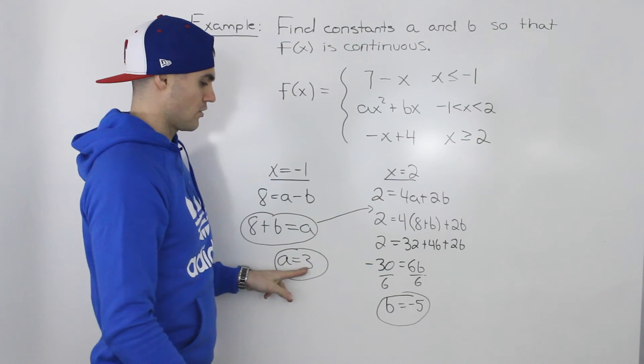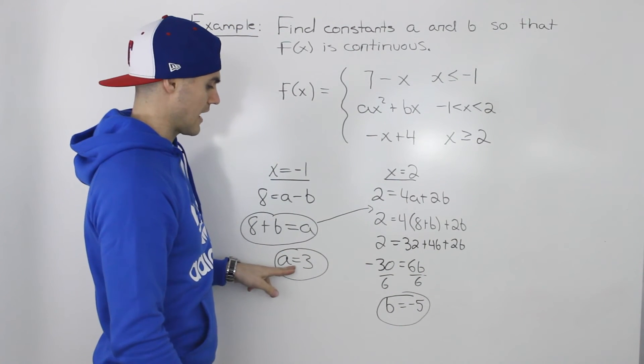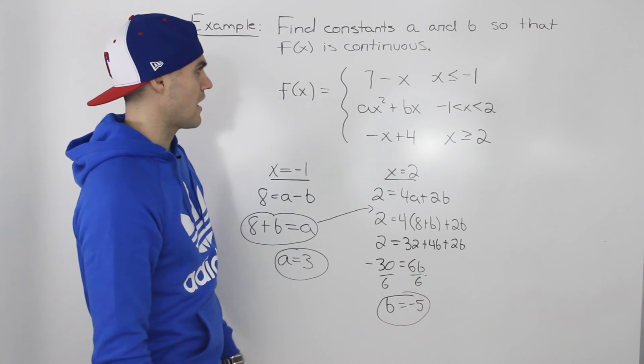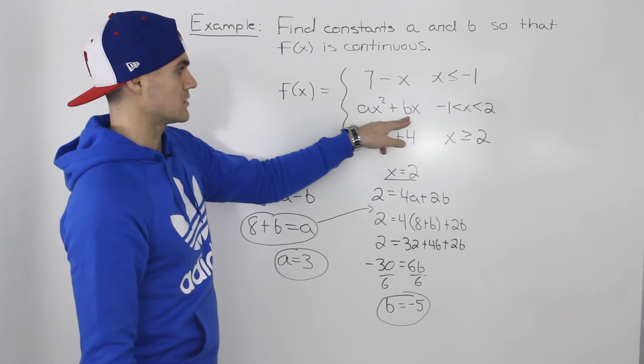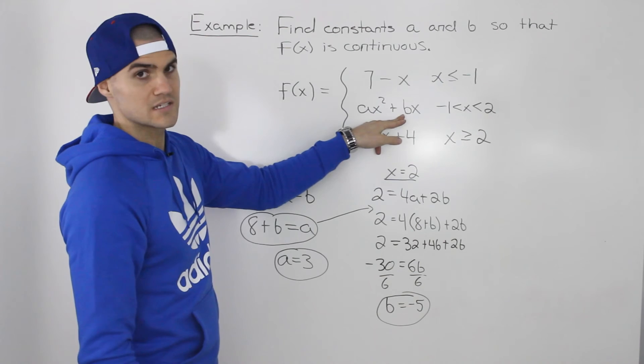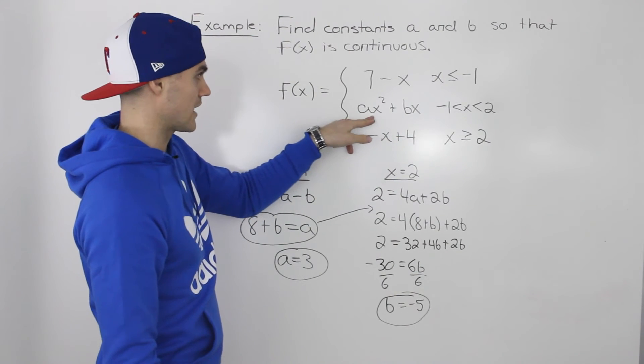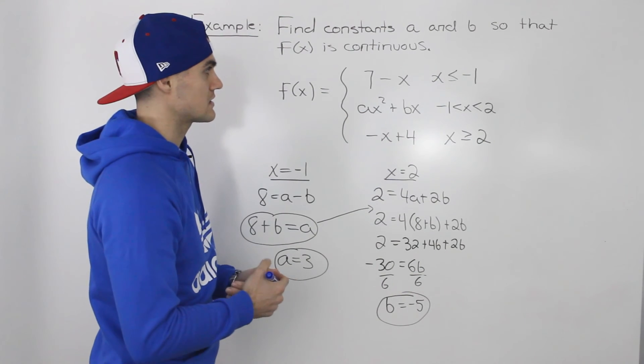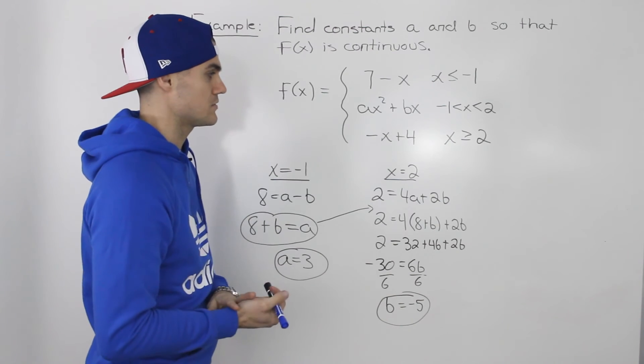So that there is our answer. Those two constants, a equals 3, b equals negative 5. If that's what the parabola in the middle piece is, 3x squared minus 5x, then this function is going to be continuous.